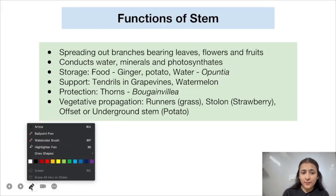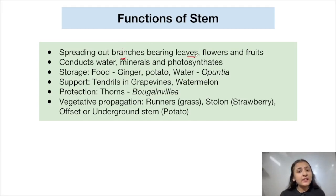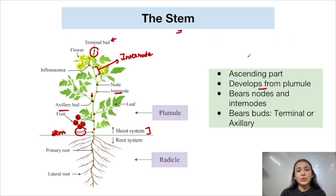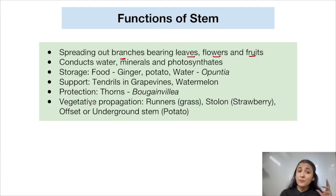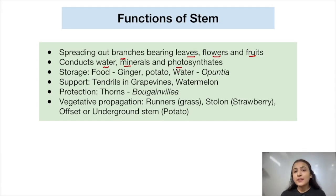The main function of the stem is spreading out of branches, which bear leaves, flowers, and fruits. Apart from this, the stem is also responsible for the conduction of water and minerals from the roots to other parts of the plant, and also for the transport of photosynthates — the food synthesized via photosynthesis in the leaves — to other parts of the plant.